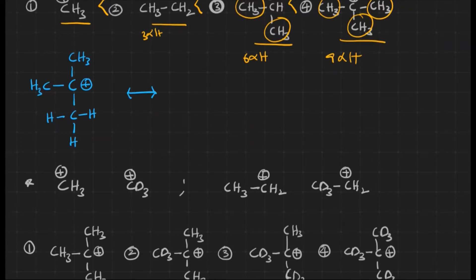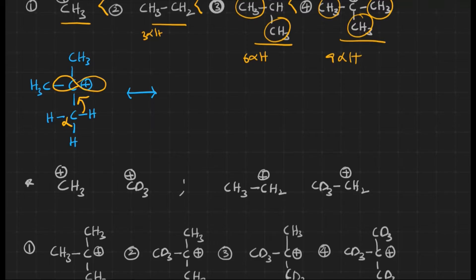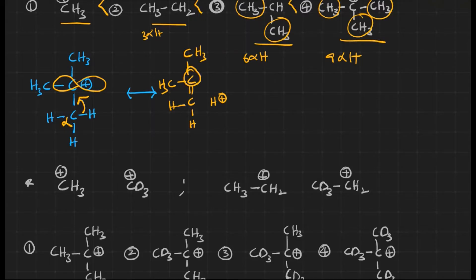The carbocation is sp2 hybridized with an empty p orbital. This empty p orbital accepts the sigma electrons from the alpha C-H bond. Because of delocalization, the positive charge on the carbocation is dispersed — the charge is disappearing, which means it is indirectly stabilizing. As number of hyperconjugations increases, stability increases.